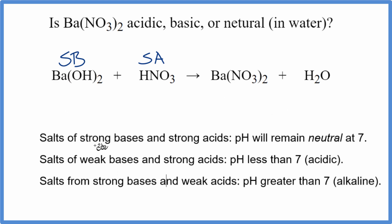So if we have a strong base and then a strong acid, pH is going to be neutral at 7 when it's dissolved in water.